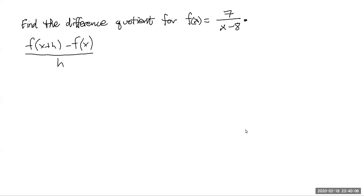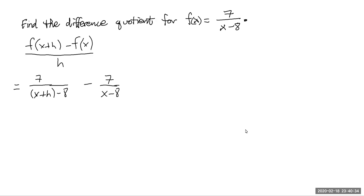So now we're going to substitute x plus h for x. So the first thing we have is 7 over parentheses x plus h minus 8. Then subtract f of x — that's an easier substitution. We just write 7 over x minus 8. Remember, there's a big division bar all over h.